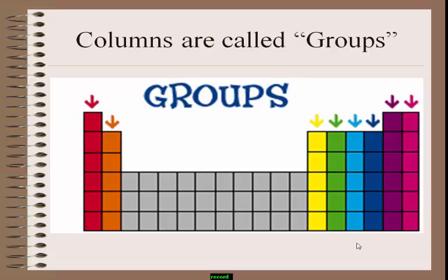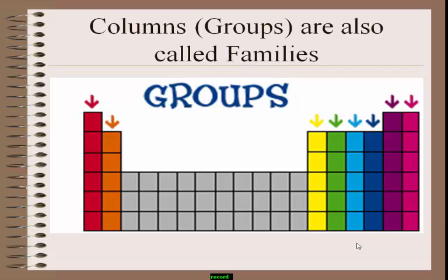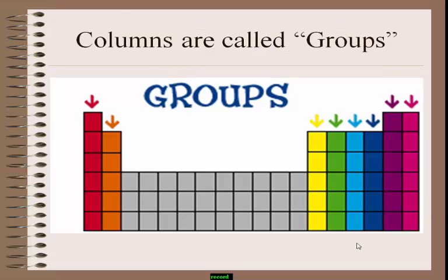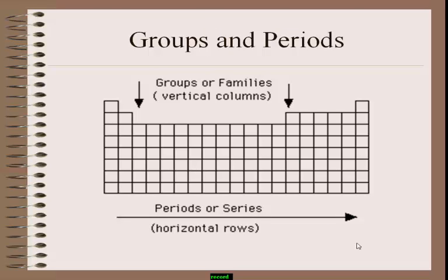These columns are called groups, and they are also called families. There are 18 families or 18 groups present in the periodic table. This diagram shows a clear picture of groups as well as periods: horizontal rows are called periods, and vertical columns are called groups or families.